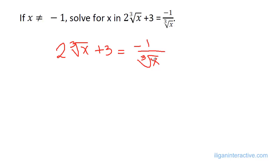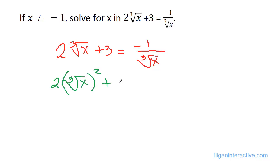What do you think is the best thing to do? We could, by default, multiply both sides by the cube root of x just to get rid of that denominator. So this will become 2 times the cube root of x squared, plus 3 times the cube root of x, equal to negative 1.